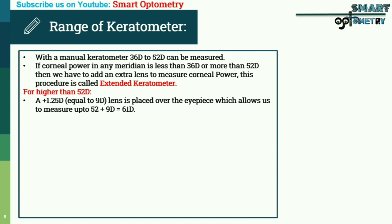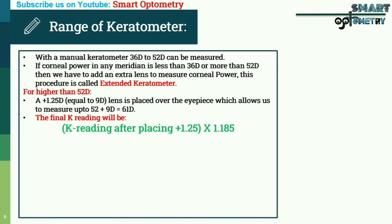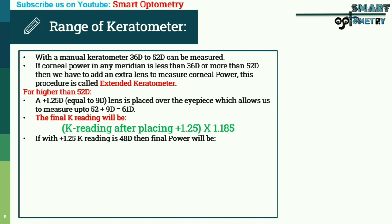measure up to 52 plus 9, equal to 61 diopters. However, the reading obtained on the keratometer after placing the plus 1.25 diopter lens in front of the eyepiece will not be the actual corneal dioptric power. We need to modify this reading to get the exact corneal power. The formula is: keratometer reading after placing plus 1.25, multiplied by 1.185. For example, if with a plus 1.25 diopter lens the keratometer reading is 48 diopters, then the final power will be 48 × 1.185 = 56.88 diopters.